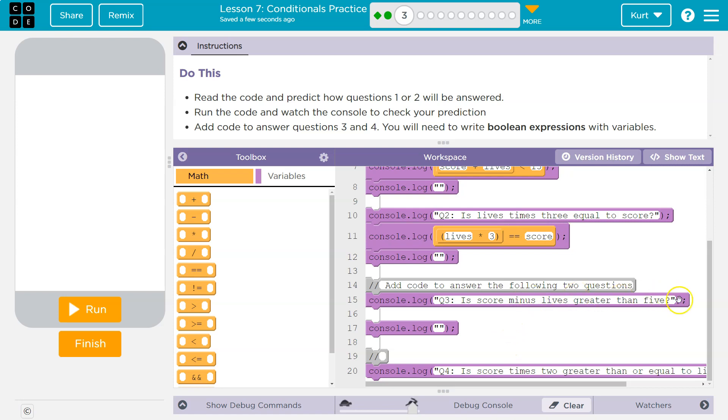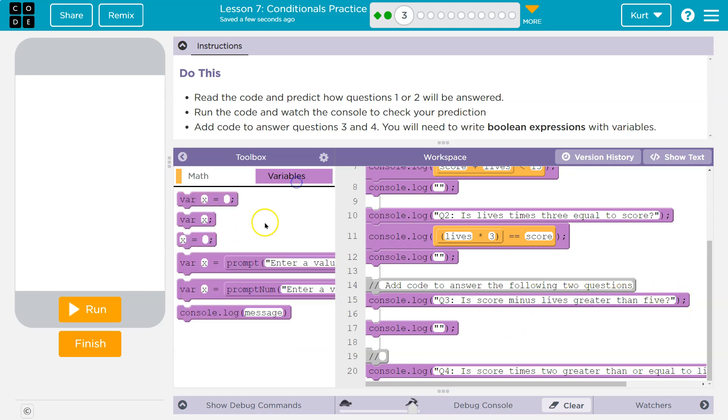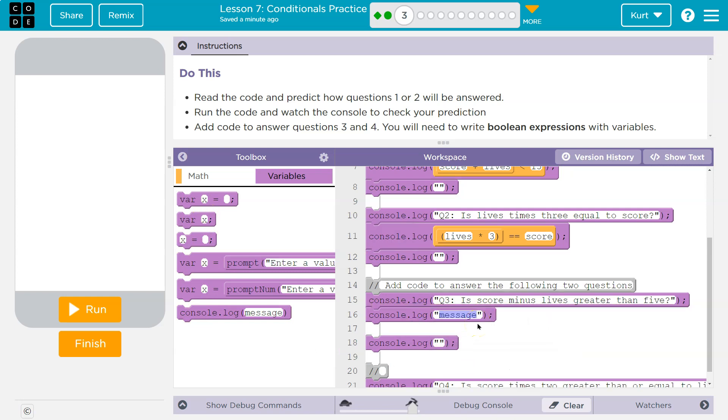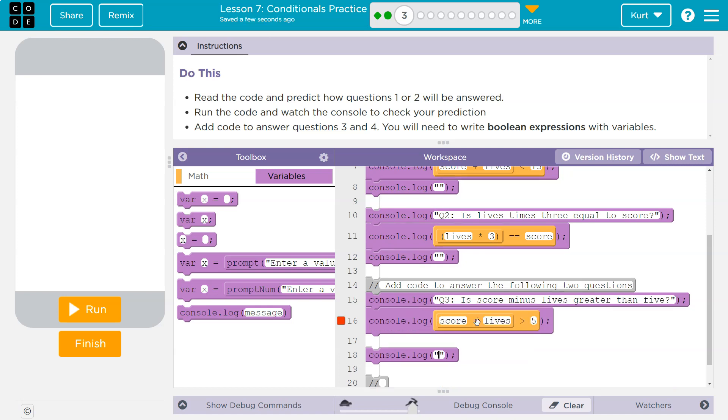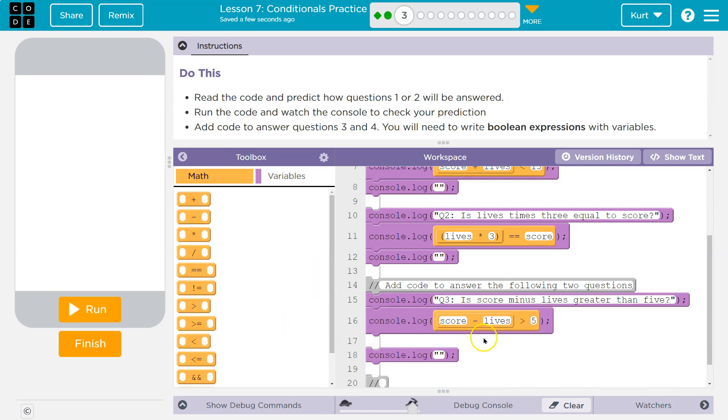Is score minus lives greater than 5? Okay. Let's go over here and get a console log. And we're saying is score - so I needed to delete everything, including the quotes. Is score minus lives greater than 5? And you could also go and drag these blocks over. That works fine too. It converts them also.